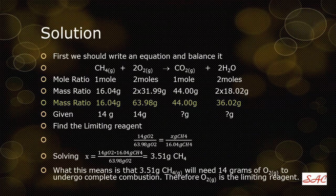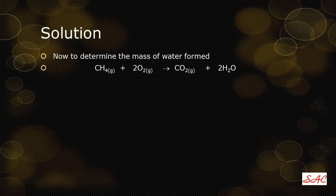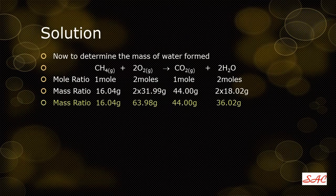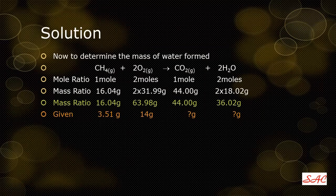Once you have the limiting reagent, you can proceed to determine the mass of water produced by the reaction between 14 grams of oxygen and 3.51 grams of methane. The equation, mole ratio, and mass ratio are the same as before. The only change in the given data is that the mass of methane has been updated from 14 to 3.51 grams — because we calculated the mass of methane that will completely react with 14 grams of oxygen. So the amounts used are 14 grams of oxygen and 3.51 grams of methane.